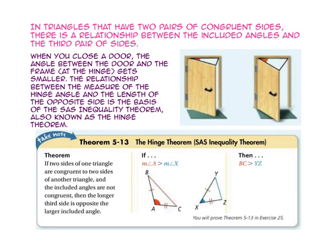In triangles that have two pairs of congruent sides, there is a relationship between the included angles and the third pair of sides. Take a look at these doors. When you close a door, the angle between the door and the frame at the hinges gets smaller. The relationship between the measure of the hinge angle and the length of the opposite side is the basis of the side-angle-side inequality theorem, also known as the hinge theorem.